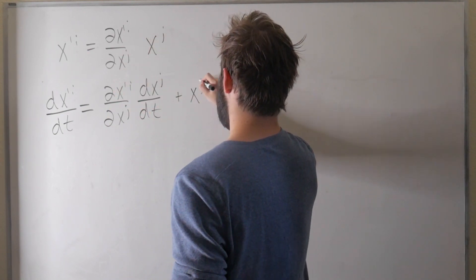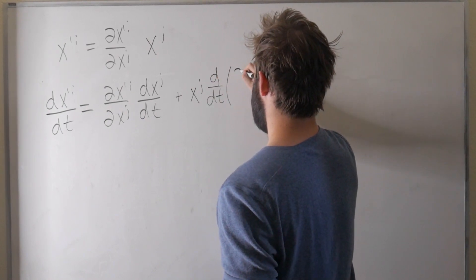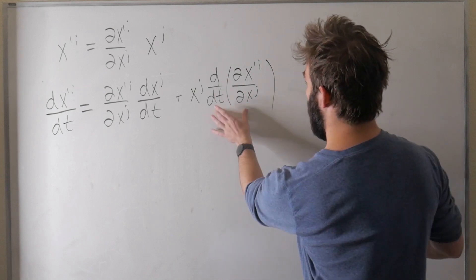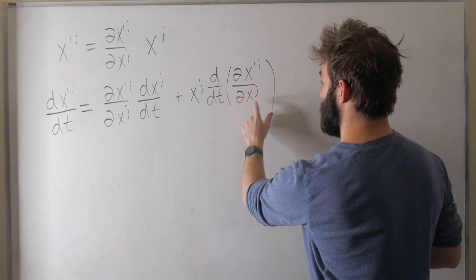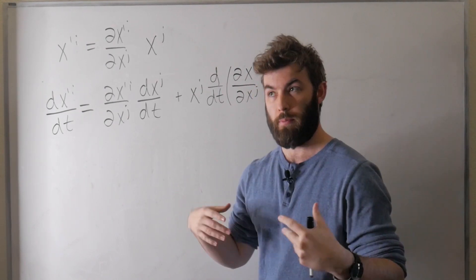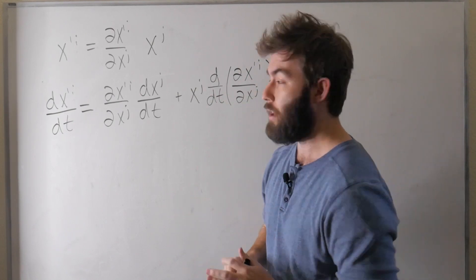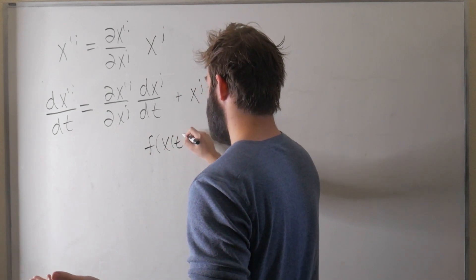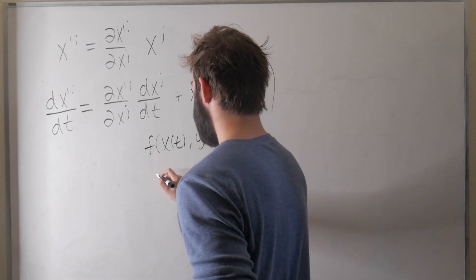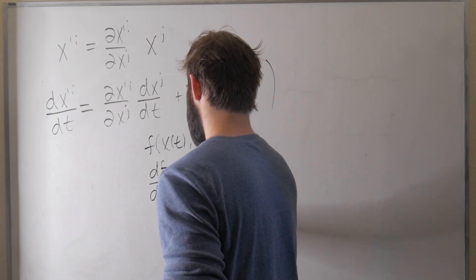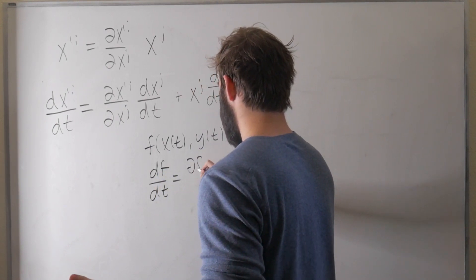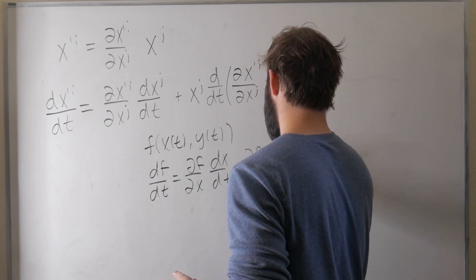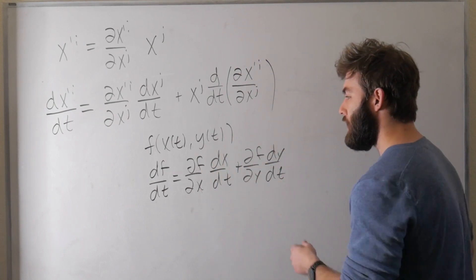Applying the product rule, this is going to be dx prime i over dx j times dx j over dt — that's exactly the transformation rule for a vector. But there's also that product rule term: plus x j times d/dt of (dx prime i over dx j). Now, what is this thing? We're taking the time derivative of the derivative of our new coordinates with respect to the old. These are functions of the old coordinates, which are functions of time, so we have to use chain rule.